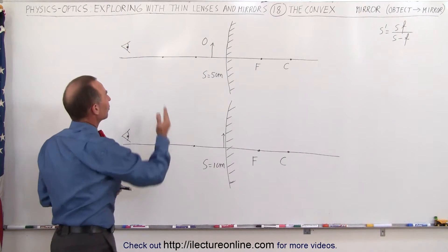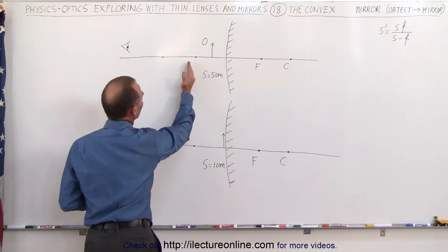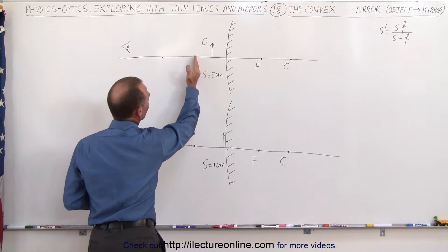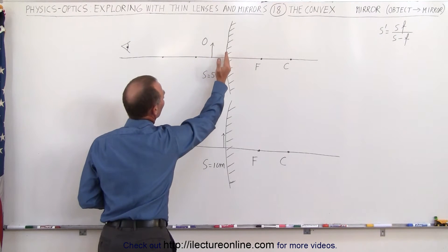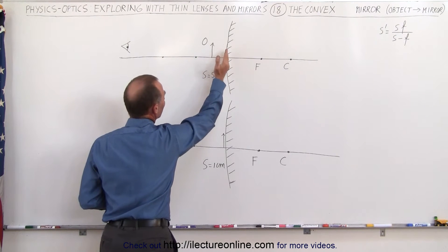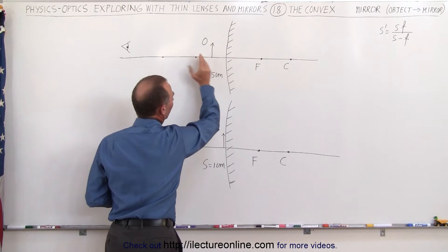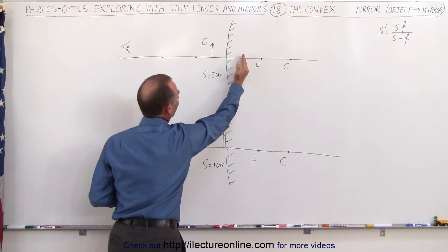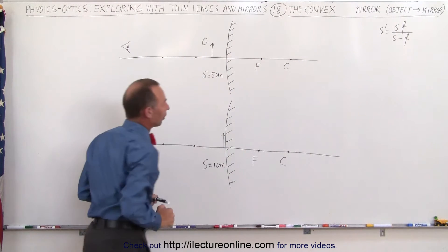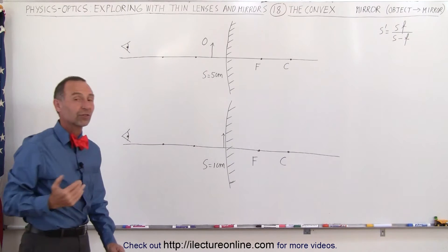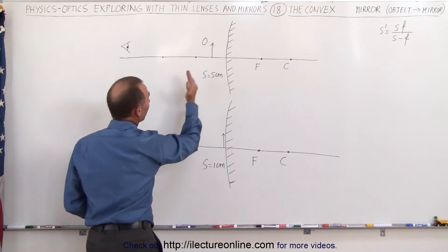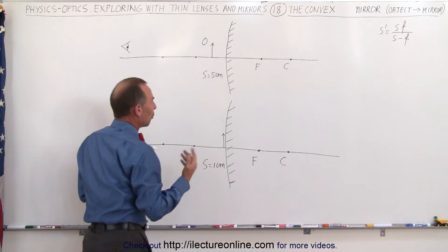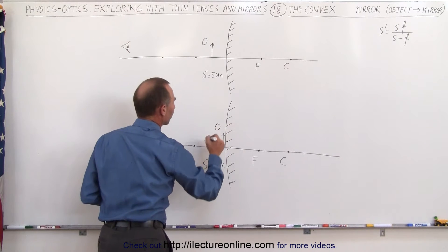In the previous video we saw that as we brought the object closer, eventually reaching the equivalent distance of the distance from the mirror to the focal point, the image moved to the halfway point between the mirror and the focal point. The question now is, as we continue to bring the object closer and closer to the mirror, what will happen to the image?